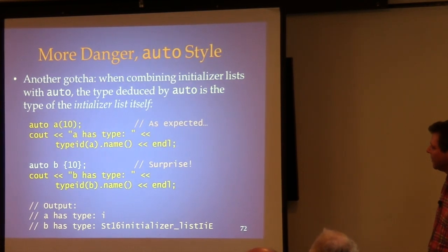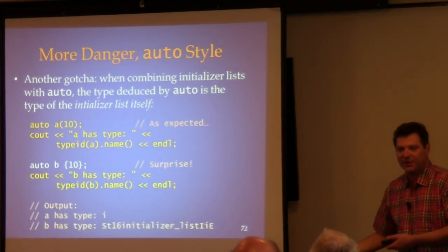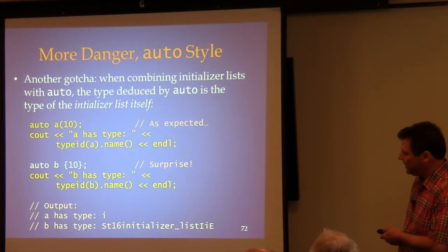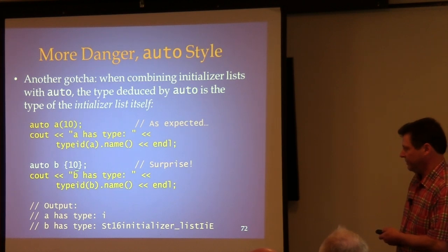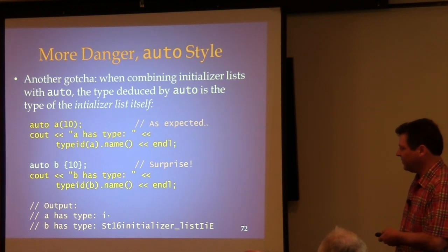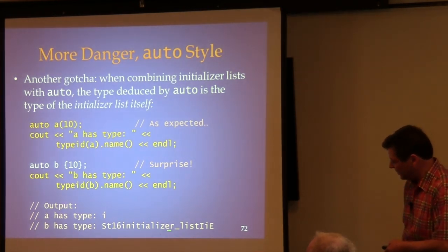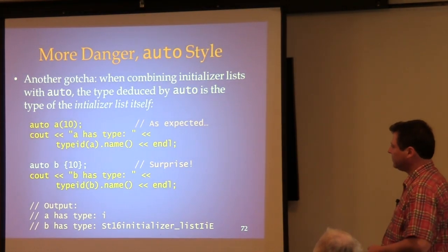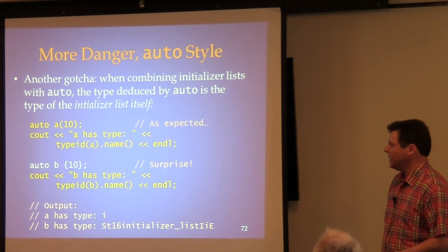Another gotcha involves mixing auto with initializer lists. If you use `auto` where it deduces the type and you use an initializer list, the type you get is `initializer_list<something>`, not the element type. Using RTTI to display the type confirms this: `a` prints as integer, while `b` prints as something containing `initializer_list`. There is no universal solution — you just have to not mix auto and initializer list.